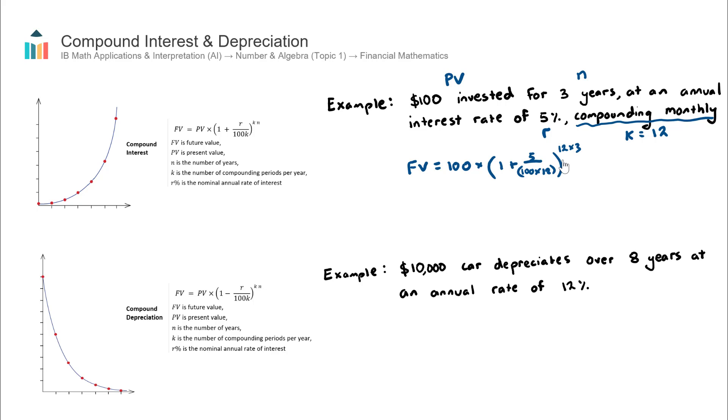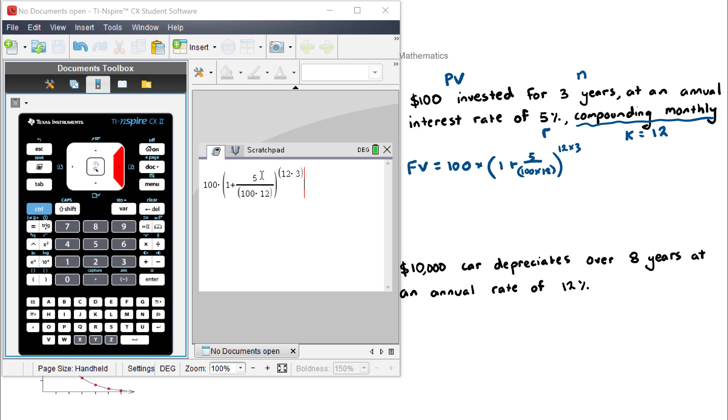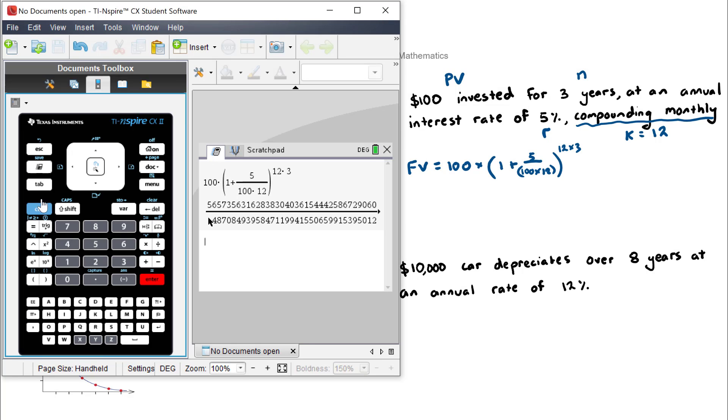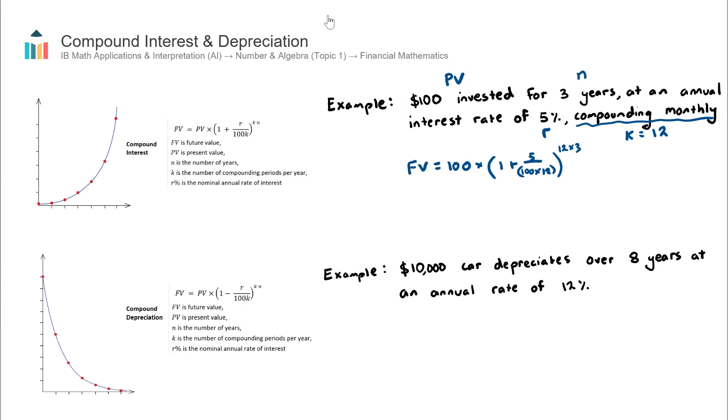There we have it. There is our formula written out with the values substituted. We can then use our calculator to find out the result. That's entered in the calculator. Let's hit enter. I get a fraction. Let's convert that to a decimal. So it's 116, just round it to three significant figures. That future value will be $116. Therefore, in this investment, this person that invested the $100 will make $16 over the 3 years.